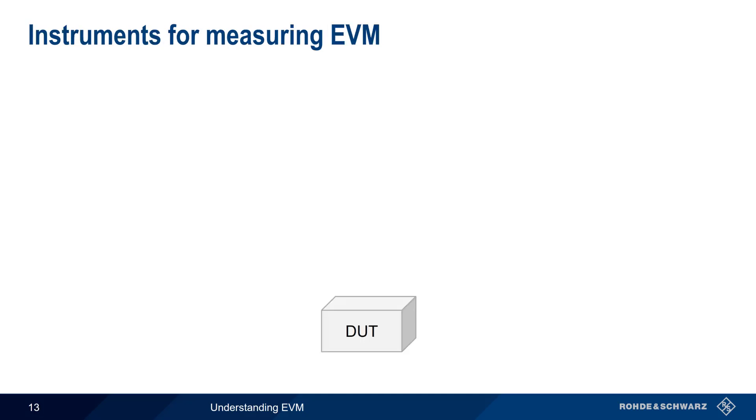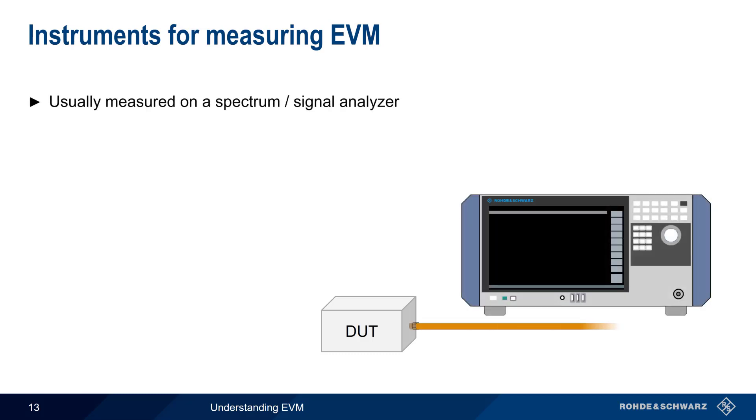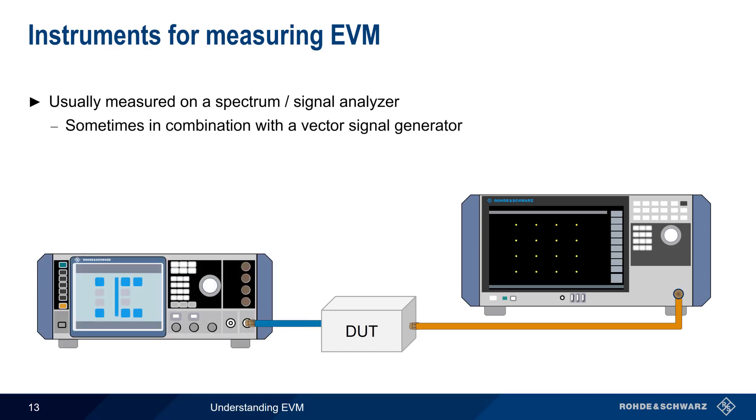Now that we understand what EVM is and how it can be used, let's look at how EVM is measured. Most often, a spectrum or signal analyzer is connected to the output of the device under test. User-supplied parameters describing the signal properties are used to demodulate the signal and calculate EVM. In some cases, a vector signal generator is used to supply a modulated signal into the input, for example, when testing an amplifier. In either case, it's very important the instruments used in the measurement setup have better EVM performance than the device under test. A common rule of thumb is a margin of 5 to 10 dB, although generally speaking, the more margin, the better.